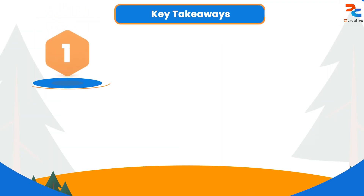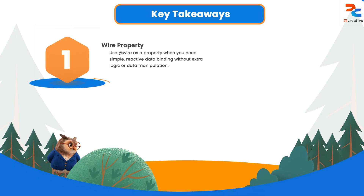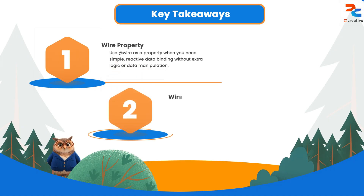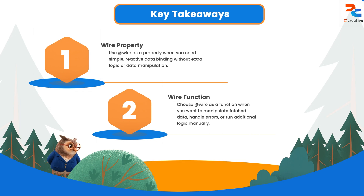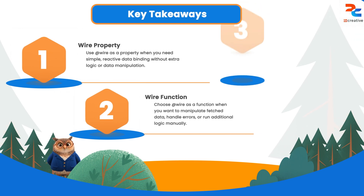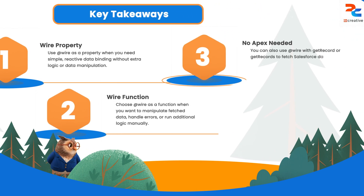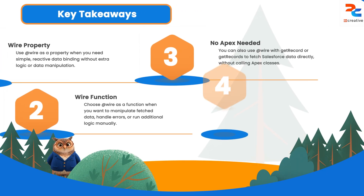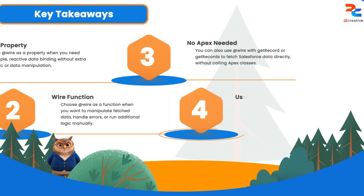So when to use each approach? Use at-wire as a property when you want simple reactive data binding without extra processing but want to get data from an Apex class. Use at-wire as a function when you need to manipulate data, handle errors explicitly, or perform additional logic. You can also use wire with getRecord to fetch data from Salesforce without Apex calls.